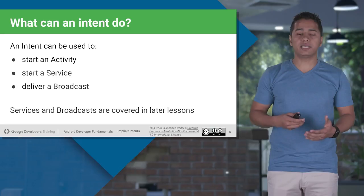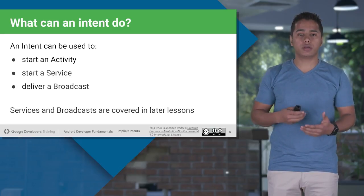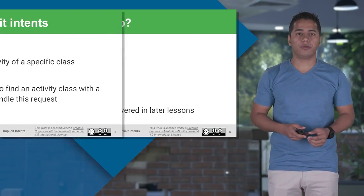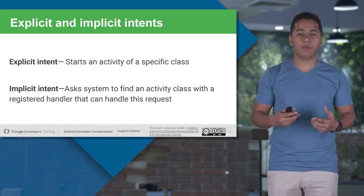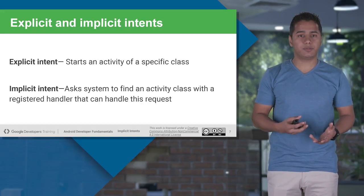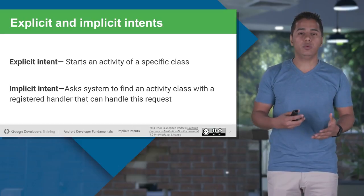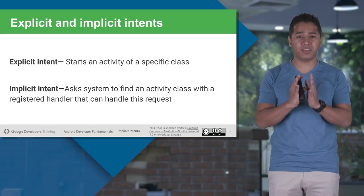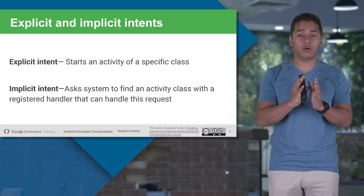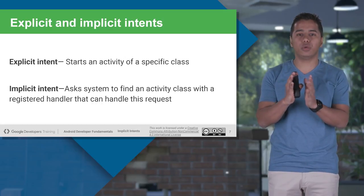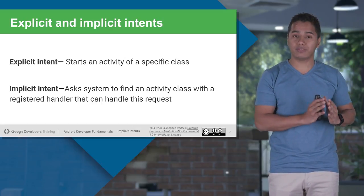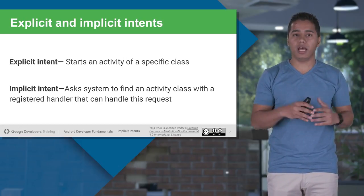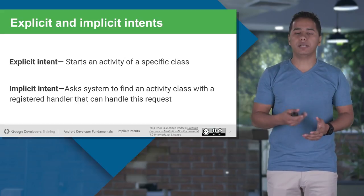How to use intents with services and broadcast receivers will be covered in later sessions. There are basically two types of intents: explicit and implicit. With explicit intent, we already know which specific class we want to transfer to — we've already seen a practical demo of that. Now we are going to learn about implicit intent.